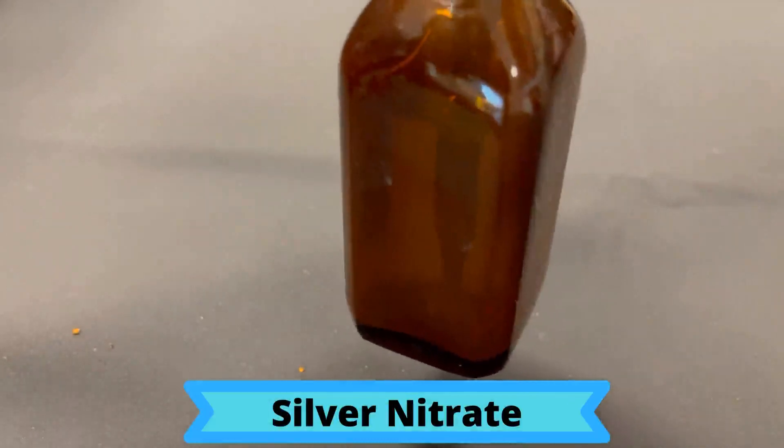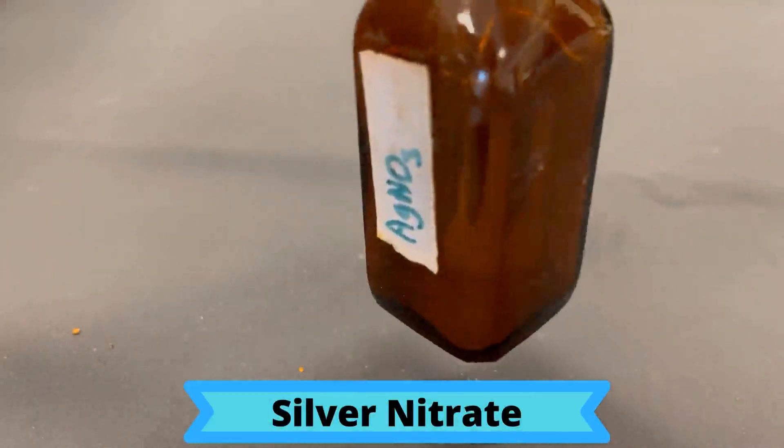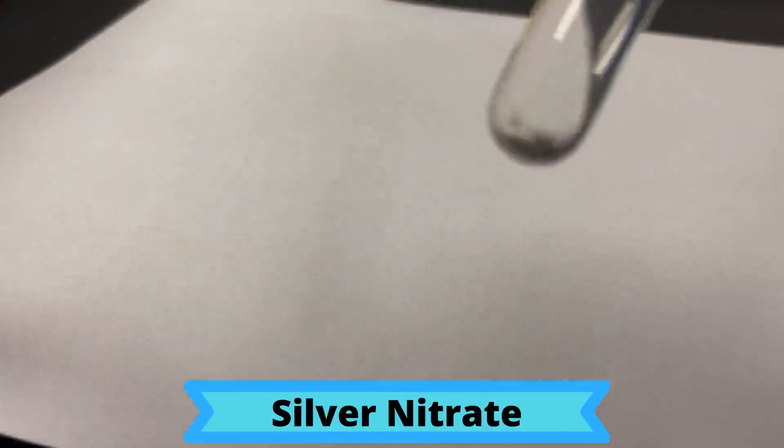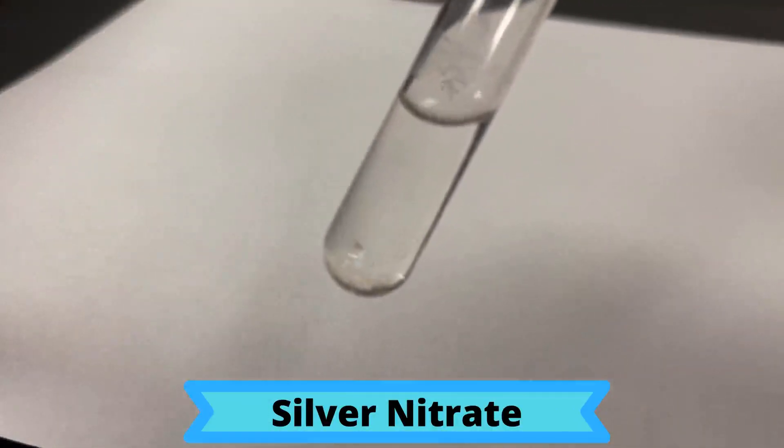Silver nitrate is a clear solution with a grayish tint. It has to be kept in a brown bottle to stop it from reacting with sunlight and breaking down.